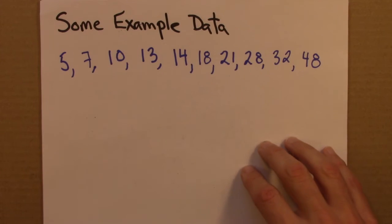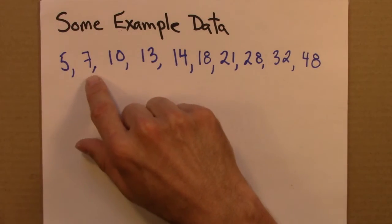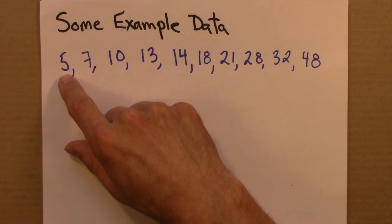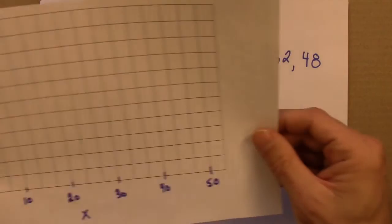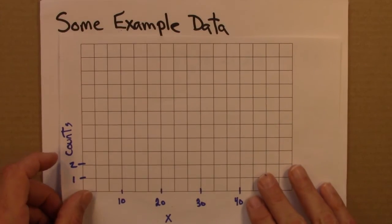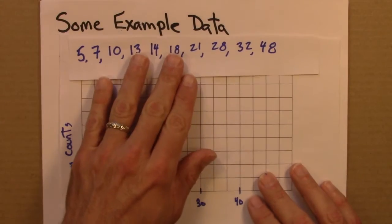So a histogram, we just count the number, frequency of occurrences, number of occurrences of data points within certain ranges. So here's a set of axes, and here's those data points again.